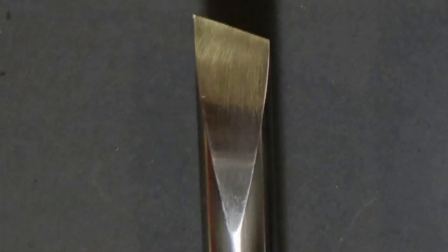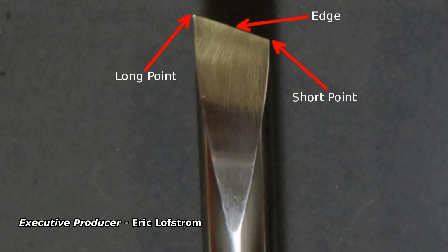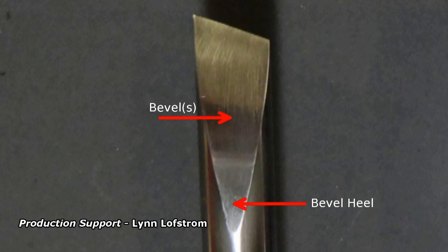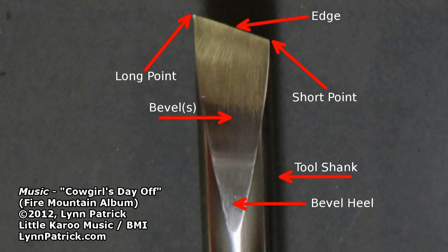Let's take a look at the skew anatomy. There are three basic parts to any skew: the edge with a long point and a short point, a bevel on each side with the heel of the bevel, and the tool shank. These basic parts make up any skew.